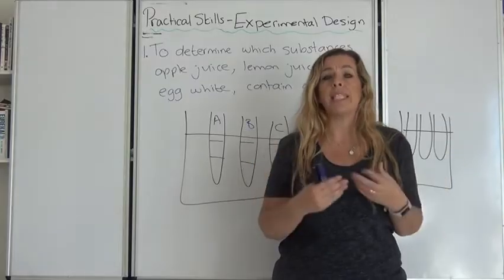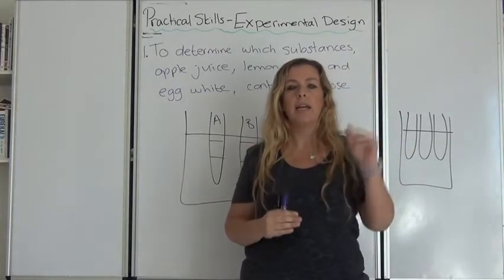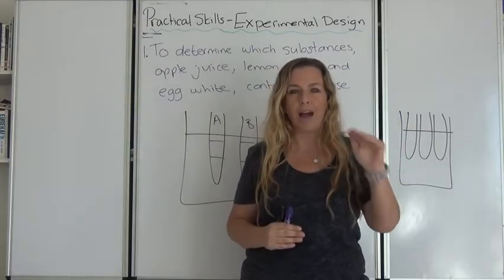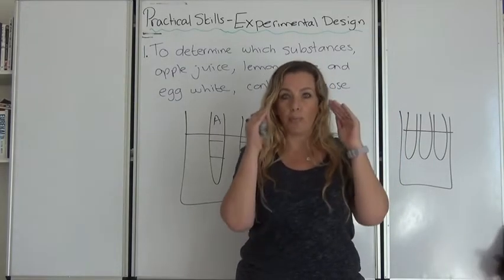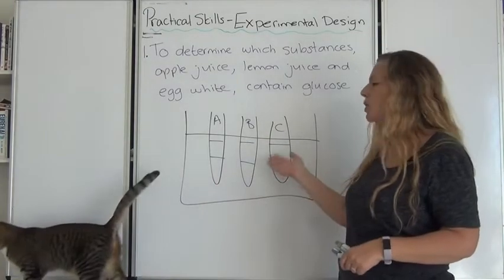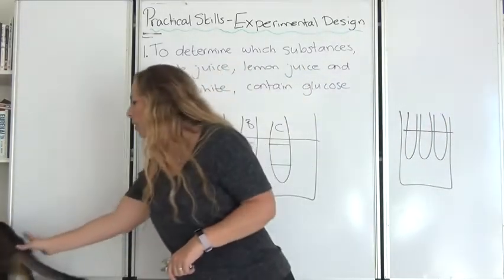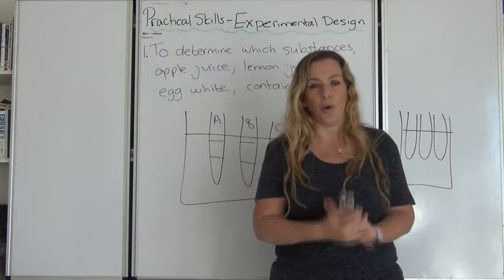You're obviously going to put it into the water bath. You need to have it for the same amount of time. In your head, every single step you say, this is a controlled variable. How am I showing that I am controlling this variable? And then at the end, obviously you will then look for the color change. And once you've seen the color change, off you go. Okay?